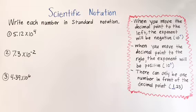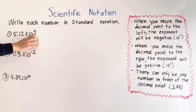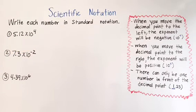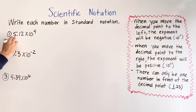For number one we have 5.12 times 10 to the fourth power. So since we know it's gonna be positive, we're gonna move the decimal point to the right how many times? Whatever is in the exponent, which is four.